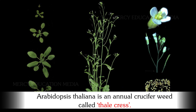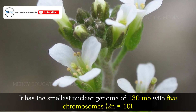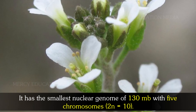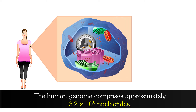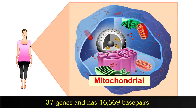Arabidopsis thaliana is an annual crucifer weed called Thalcress. It has the smallest nuclear genome of 130 MB with 5 chromosomes, where 2N is equal to 10. The human genome comprises approximately 3.2 × 10⁹ nucleotides. The human mitochondrial genome contains 37 genes and 16,569 base pairs.